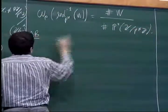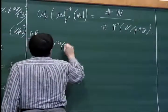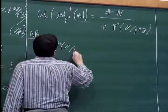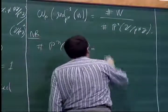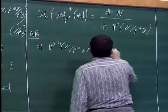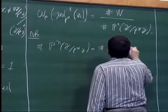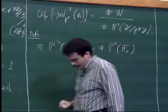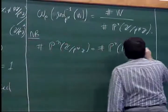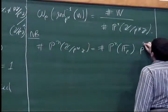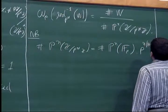It's enough to define the measure on these subsets. I define ω_p of one of these subsets to be the cardinality of W divided by the cardinality of P^n(Z/p^N Z). The cardinality of P^n(Z/p^N Z) is simply the cardinality of the projective space over the finite field F_p times p to the power n(n-1).